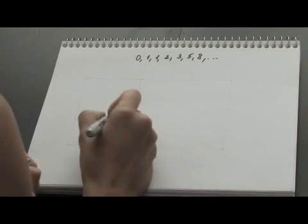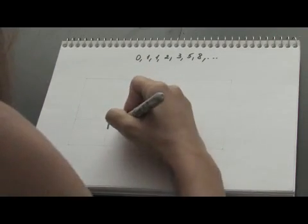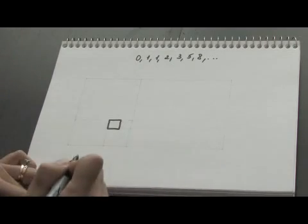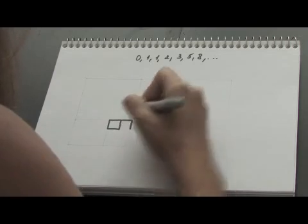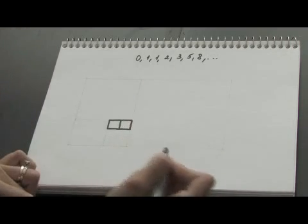First I draw the square one by one unit in measure like this, and one more square right next to my first square with the same measure.